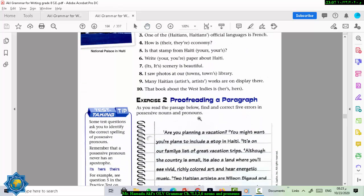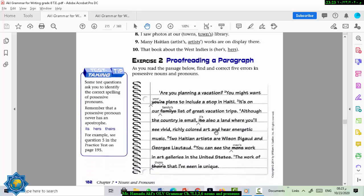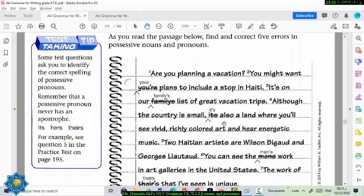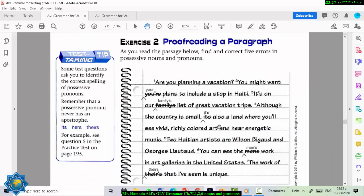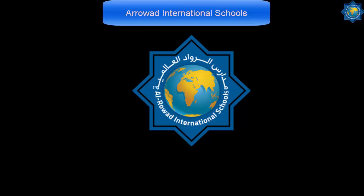Now, in the next exercise, proofreading a paragraph. As you read the passage below, find the correct five errors in the possessive noun and pronoun. There are five mistakes in this paragraph. Stop the video. Start it. Now, that's the answer. Check your marks. Put a mark out of five. And here we come to the end of today's lesson.